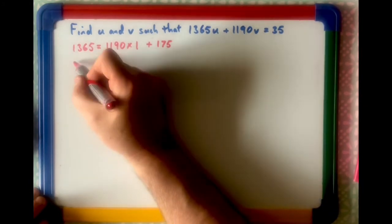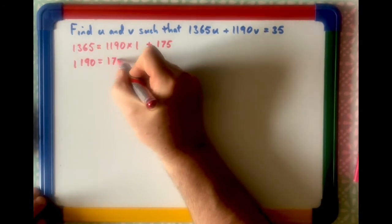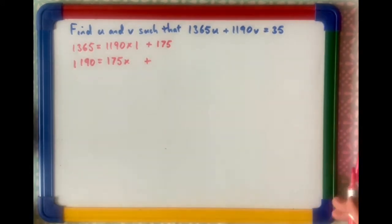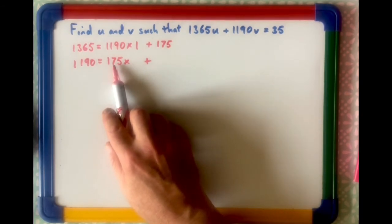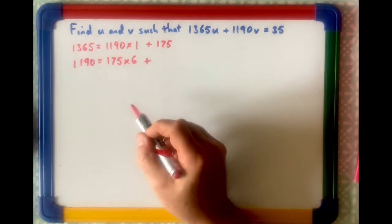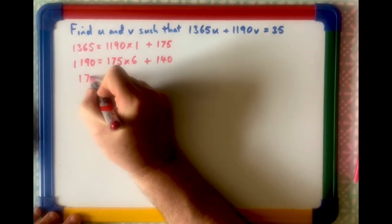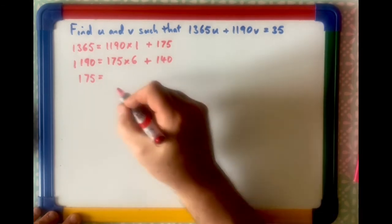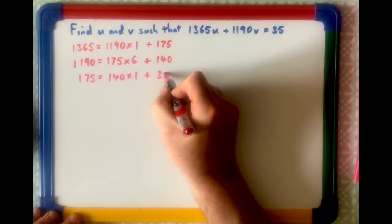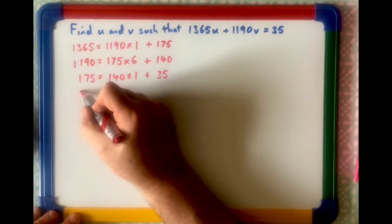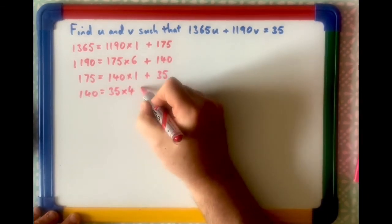Next time round, remember, that goes to this side, so 1190 equals 175 times something plus something else. Remember, you can use your calculator to try it or do it by long multiplication, whatever. But anyway, looking at this one, I tried 7, first of all, too big, so it was 6. And it gave me a remainder of 140. Now, the next one was 175 equals 140 times, well, it's obviously got to be 1 plus 35.